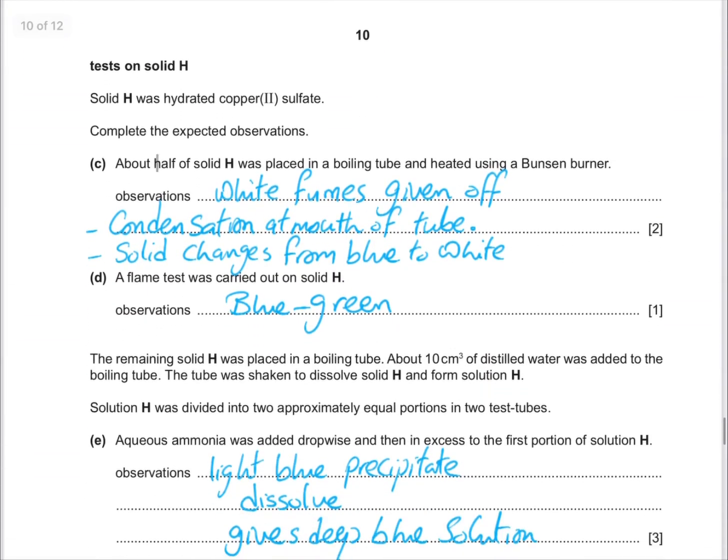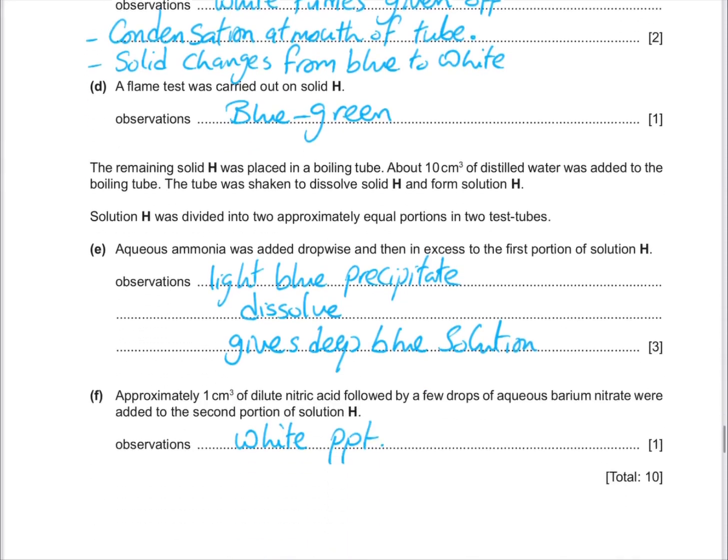Then solid H was hydrated copper sulfate. Complete the expected observation. So here we are going to heat the solid. And we will add it to the boiling tube with a Bunsen burner. We will see white fumes and condensation on the tube. And the solid is hydrated. And the solid will change from blue to white. And the flame test of H will be blue-green.